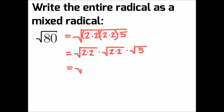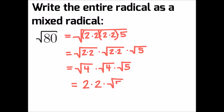Now we can simplify what's inside the radical to the square root of 4 times the square root of 4 times the square root of 5. We can solve for those radical values: the square root of 4 is 2, times 2, times the root of 5. So we can simplify our final answer to be 4 root 5.